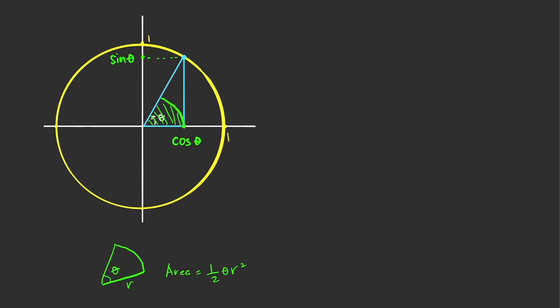Let us first consider the case where the angle theta is between zero and pi over two — a positive angle. It is clear from this figure that the area of this green sector is equal to one-half theta times cosine squared theta.